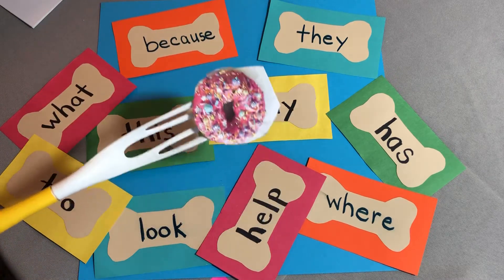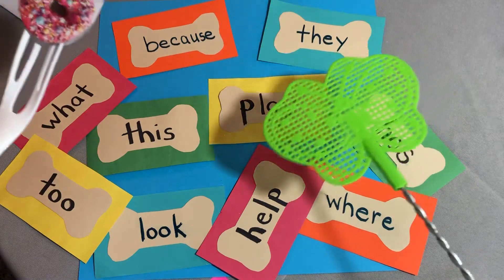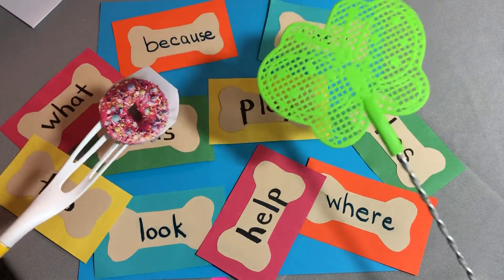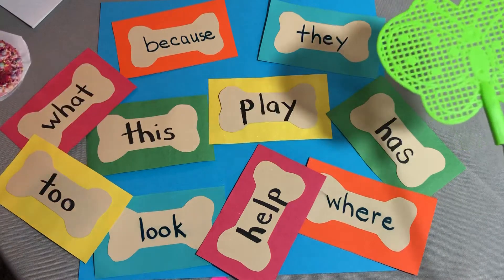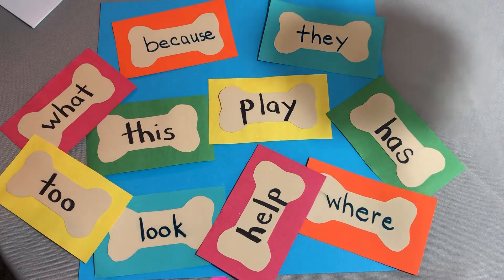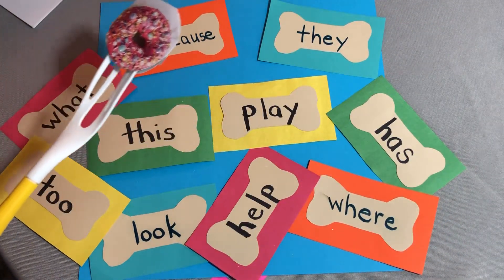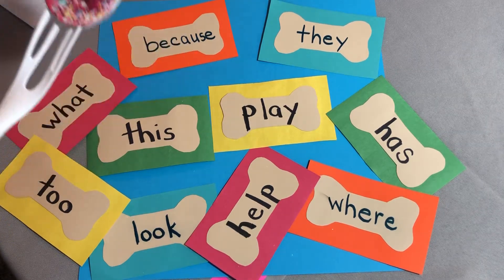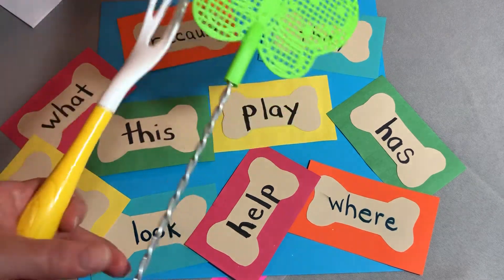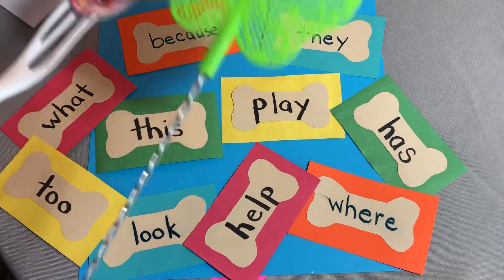I'm going to use my doughnut swatter and my butterfly fly swatter to play the game. You can play this on your own, but it is kind of fun to play with a partner. Your partner has one swatter and you have another, and somebody says one of your fastest snap sight words — maybe they say 'help' — and you look, look, look, then try to be the first one to swat it. Whoever gets it first wins it. You can keep score or just have fun.